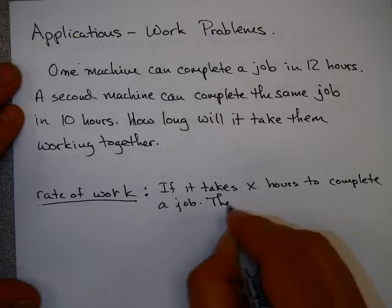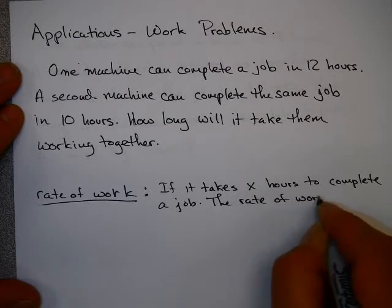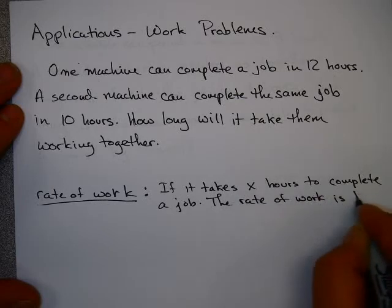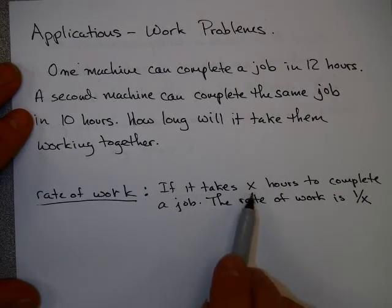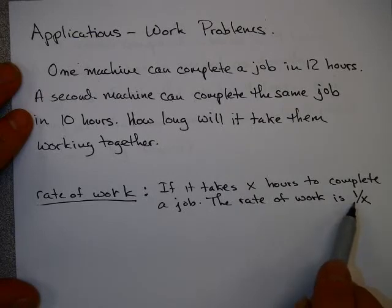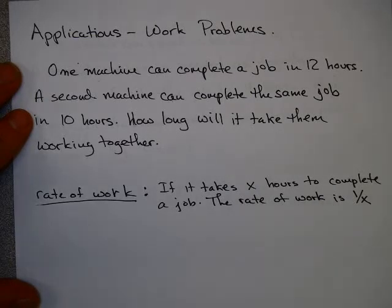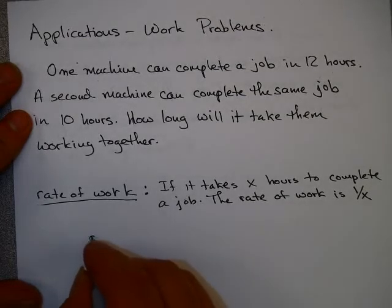Now a key concept in a work problem is this idea of the rate of work. If it takes x hours to complete a job, the rate of work is 1/x. Now what that means is that, for example, if it took 10 hours to complete a job, then it's reasonable to assume that after one hour you have one-tenth of the job completed. So the idea behind a rate of work is how much do you have of the complete job completed in one hour?